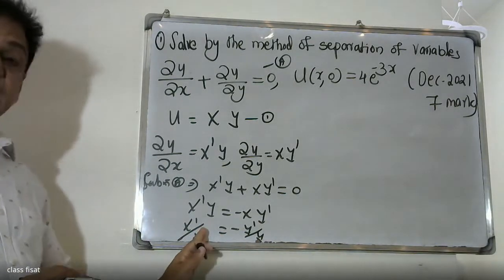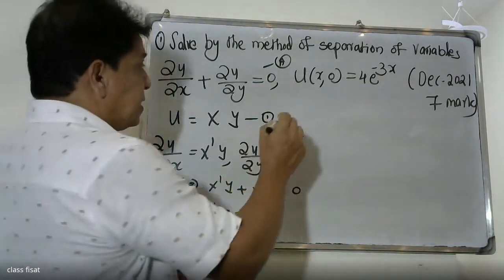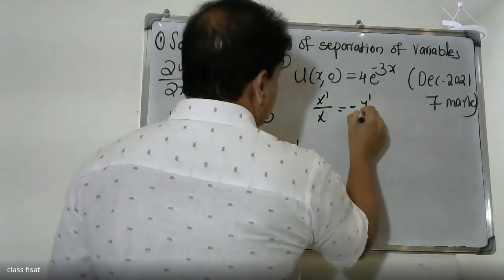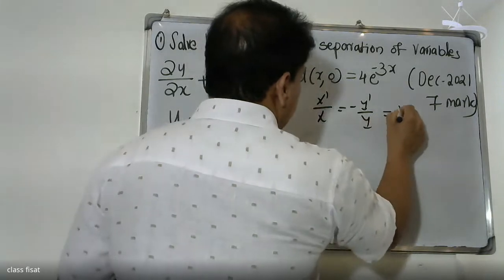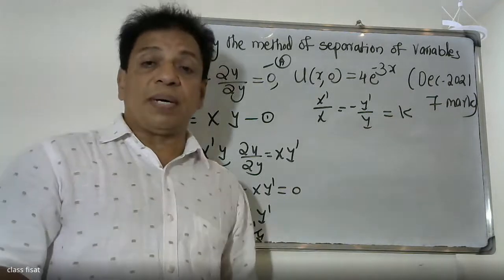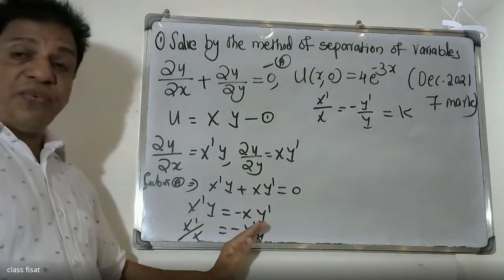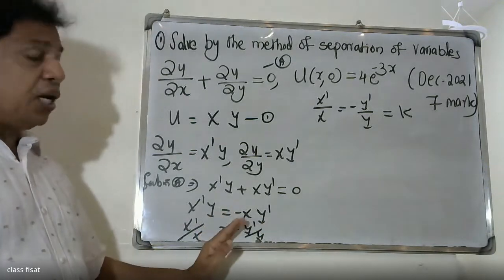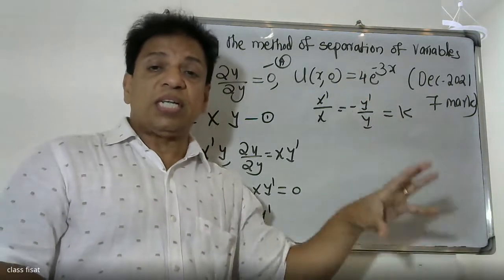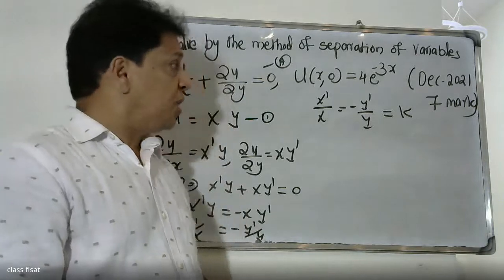The left-hand side is a function of x only and the right-hand side is a function of y only. Therefore X'/X = −Y'/Y must equal a constant k. This constant k is called the separation constant.